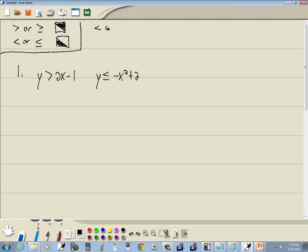Now if we got a less than or greater than, then we're going to have a dotted line. If we have a less than or equal to or greater than or equal to, we'll have a solid.